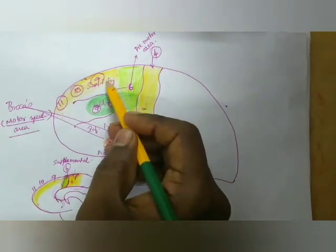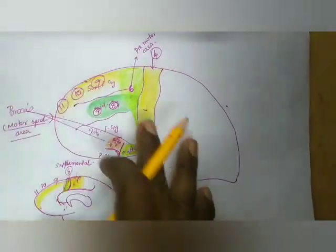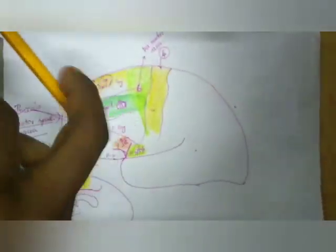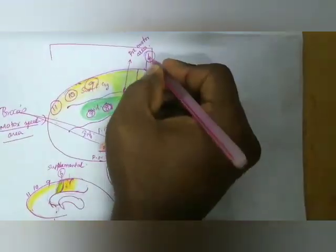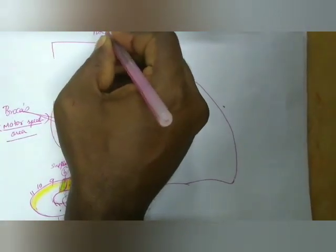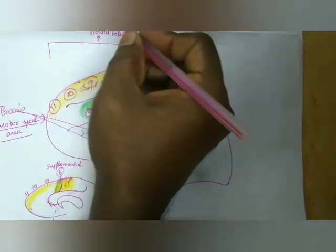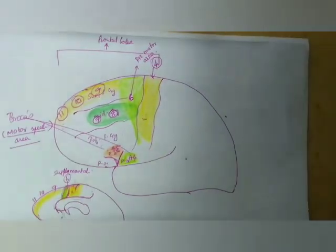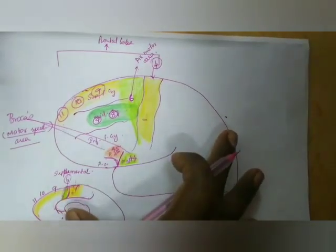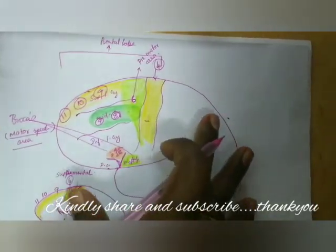These are the functional areas located in the frontal lobe. In our next video, we will study the functional areas located in the other regions of the cerebral hemisphere.